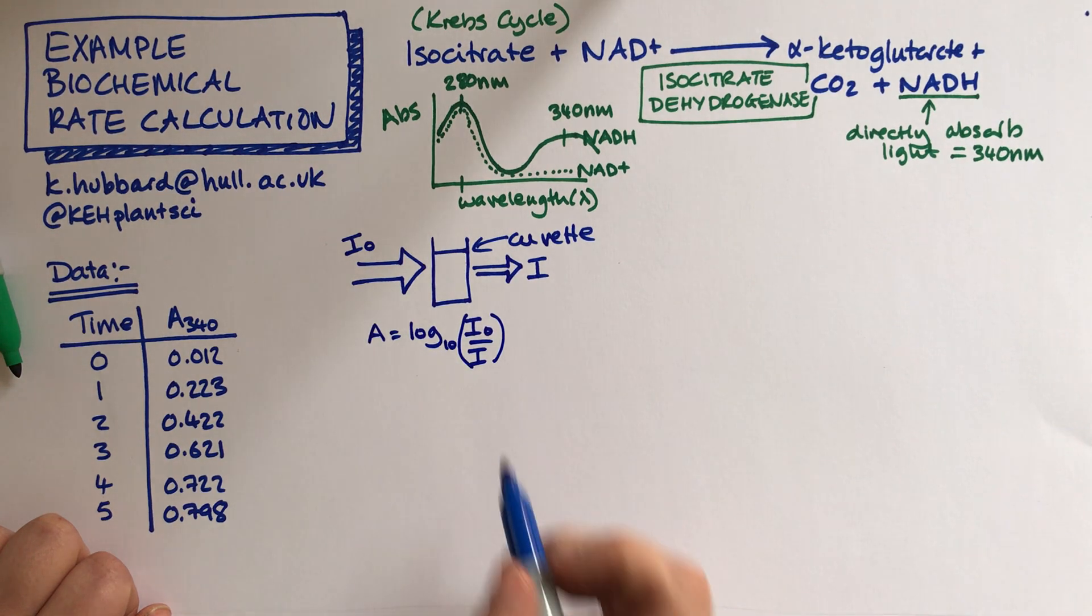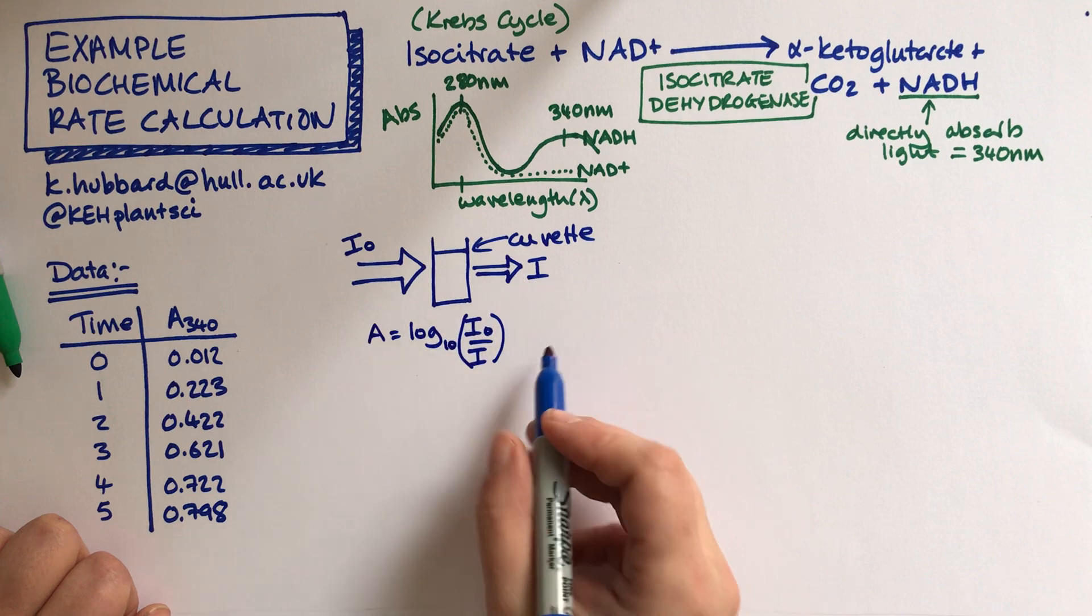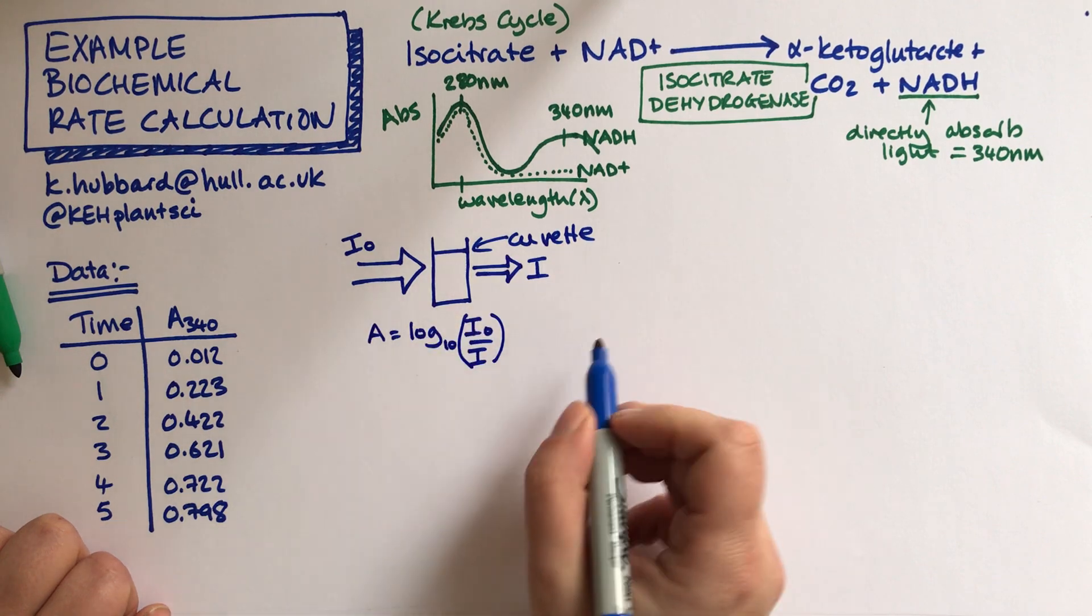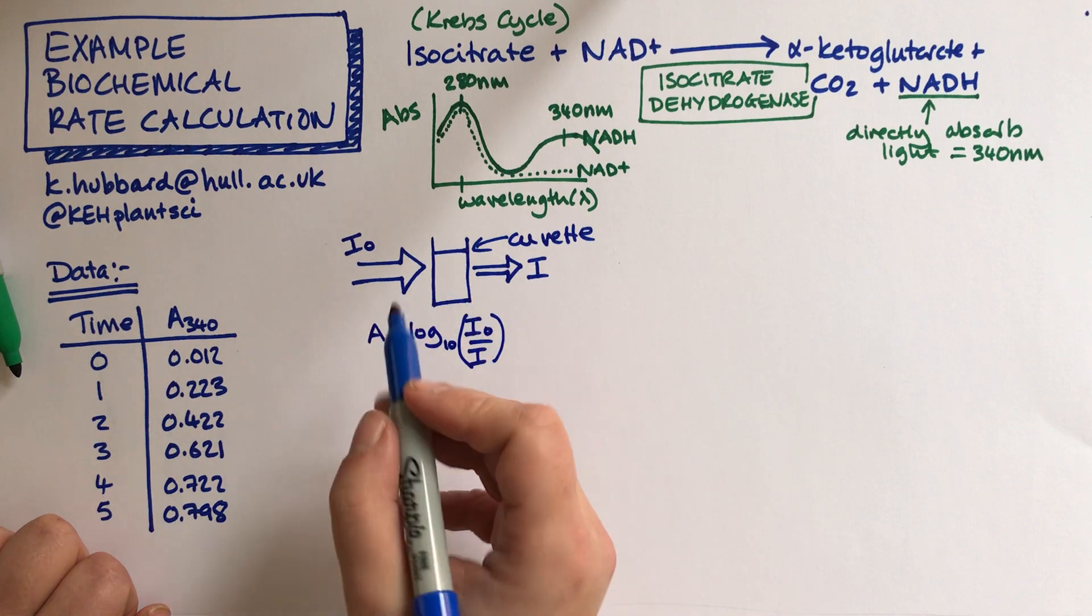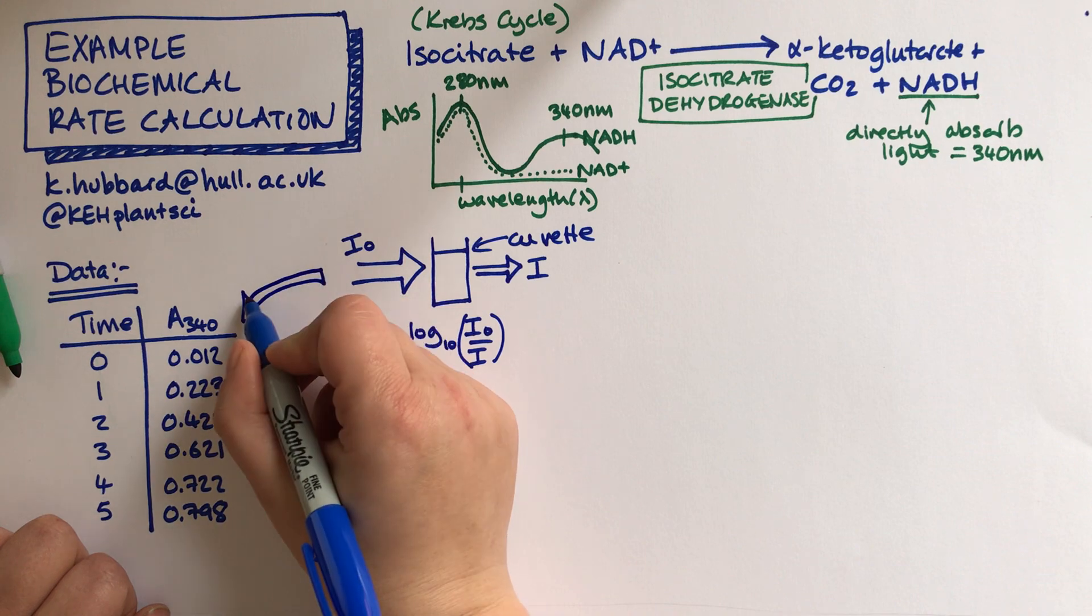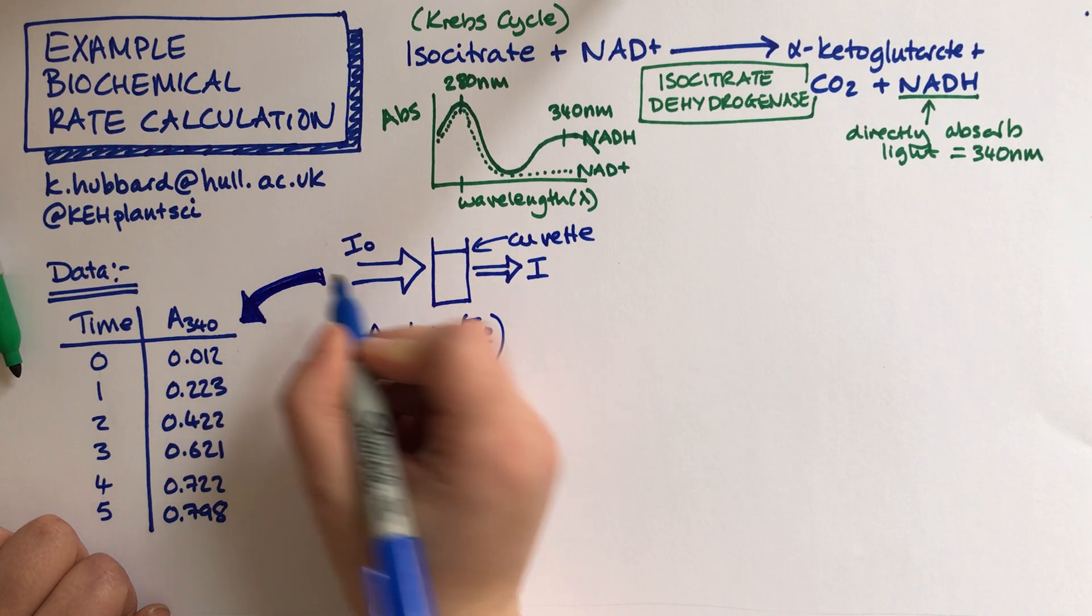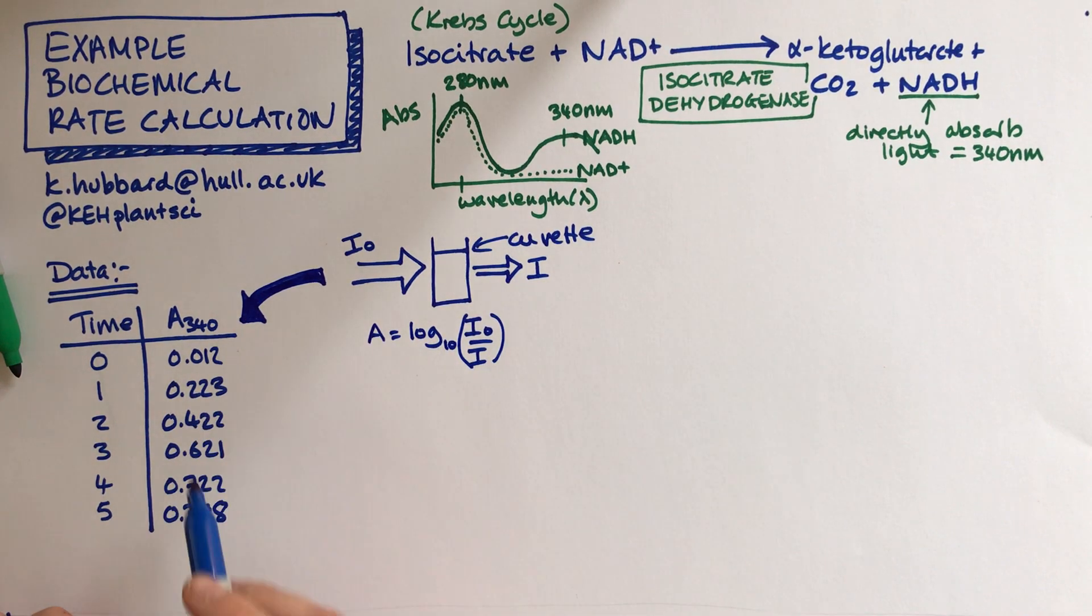There's another video about where that maths comes from but what the spectrophotometer will do actually is to give you an absorbent value. The spec is doing this maths for us and it's just giving us an absorbance value and this is the data that we've got.